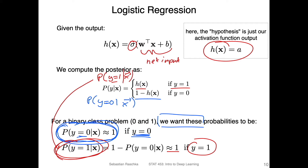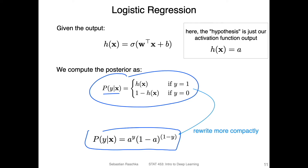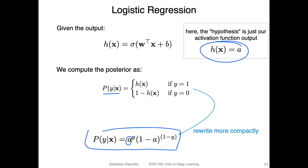We can actually rewrite this piecewise function using a more compact notation that summarizes it in one equation. Here, 'a' is the activation — just an abbreviation for h(x), the logistic sigmoid applied to the net input.